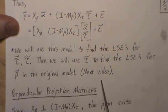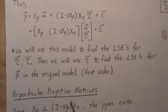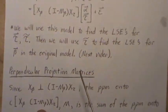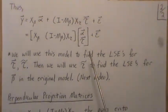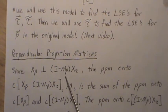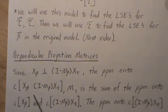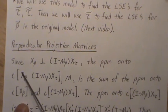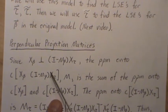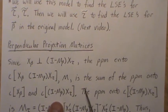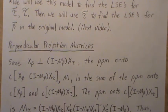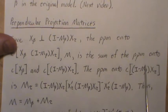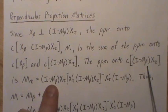We will use this model to find the least squares estimates for τ. Since the column spaces are orthogonal, we only need y, the tau columns, and τ itself to find the least squares estimate. Once we find the least squares estimate for τ, we'll use it to find the least squares estimates for β back in the original model — and that's going to be our next video. Now, for the perpendicular projection matrices: recall our two column spaces, which are orthogonal to each other.